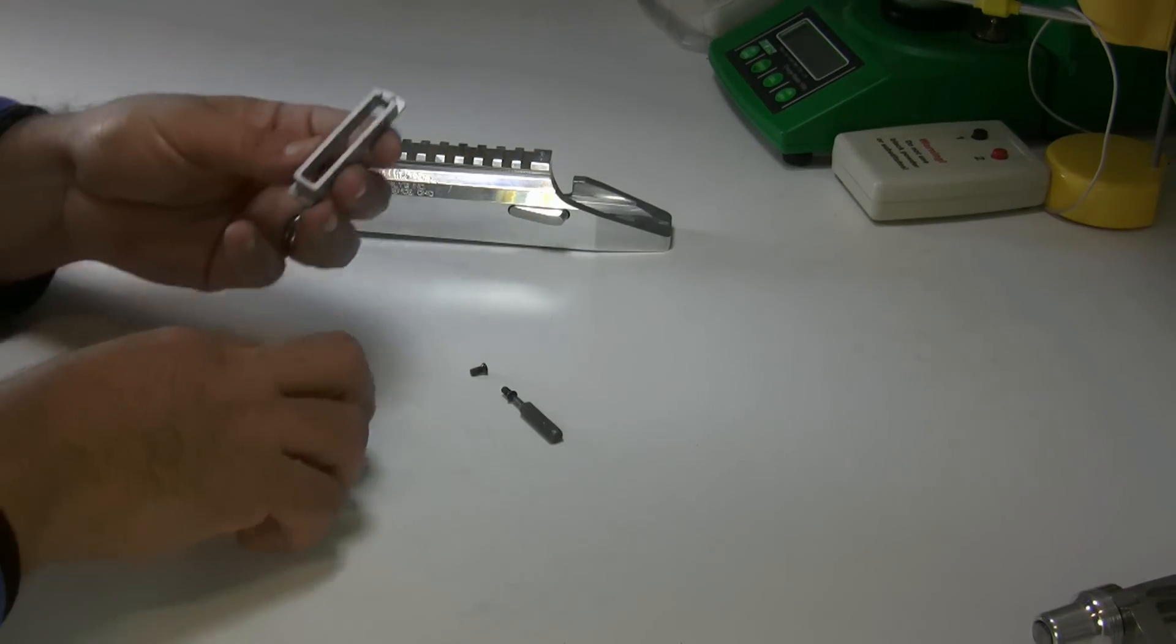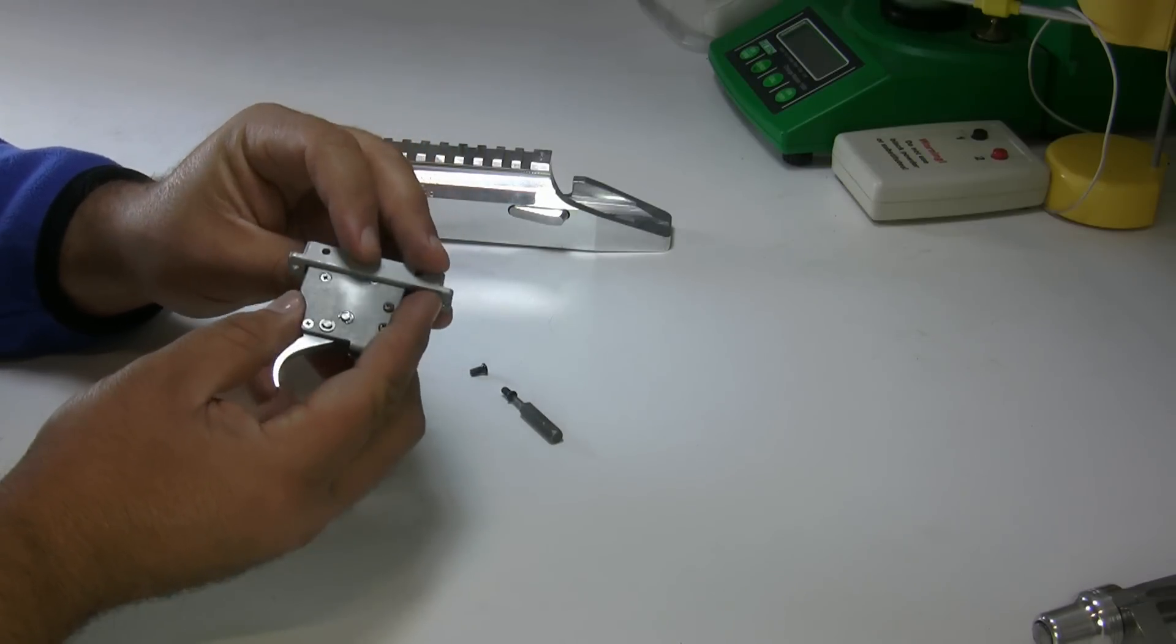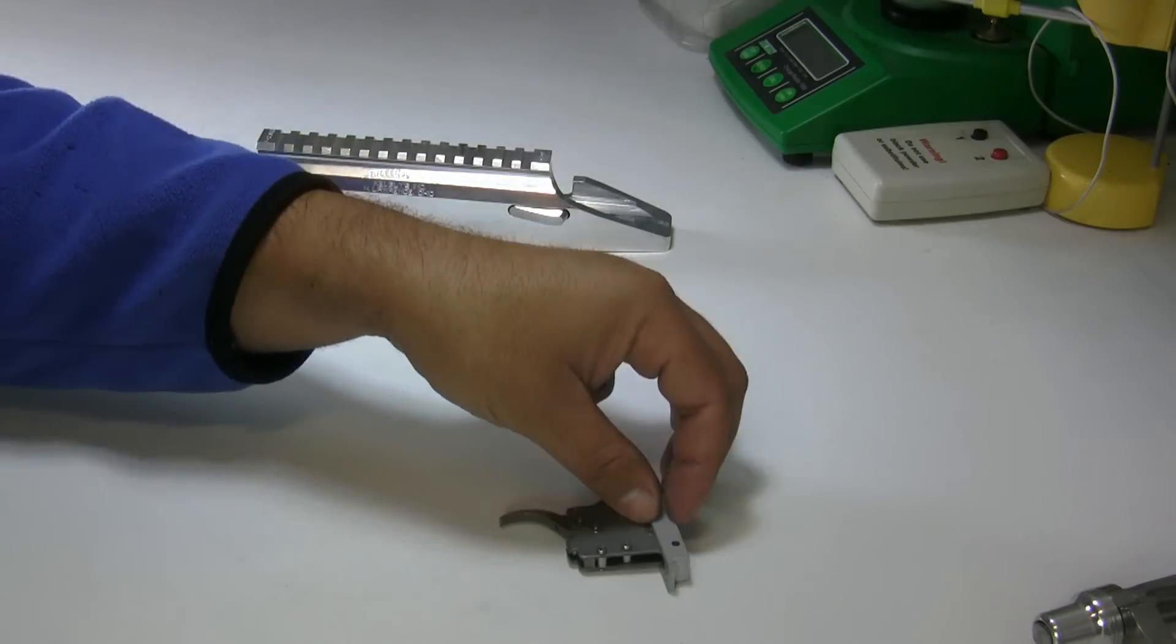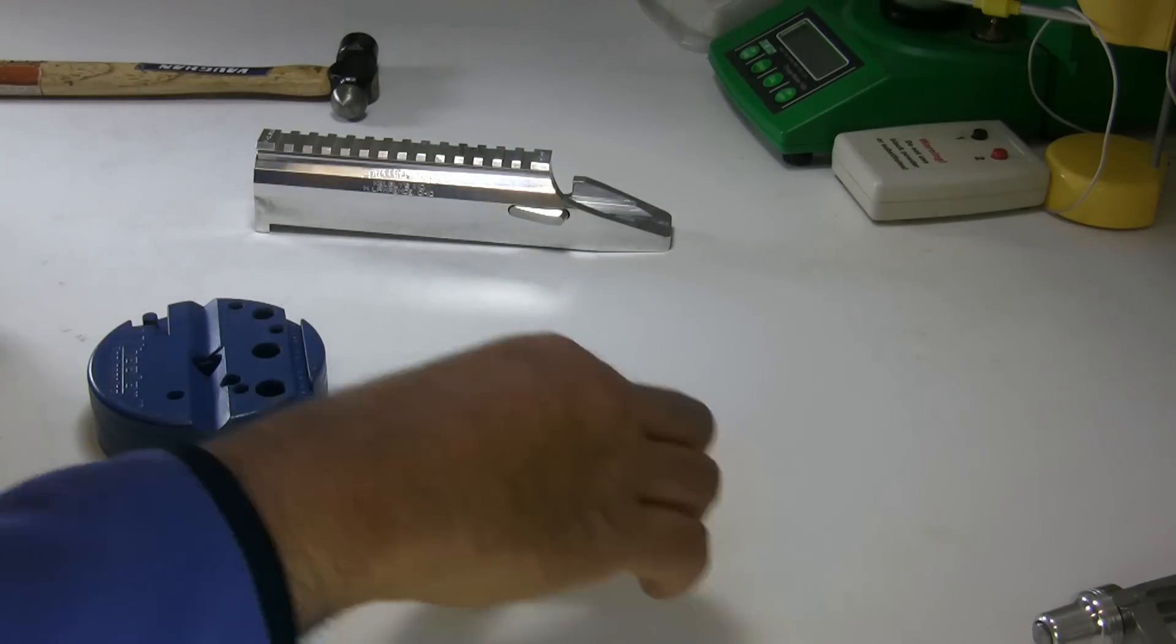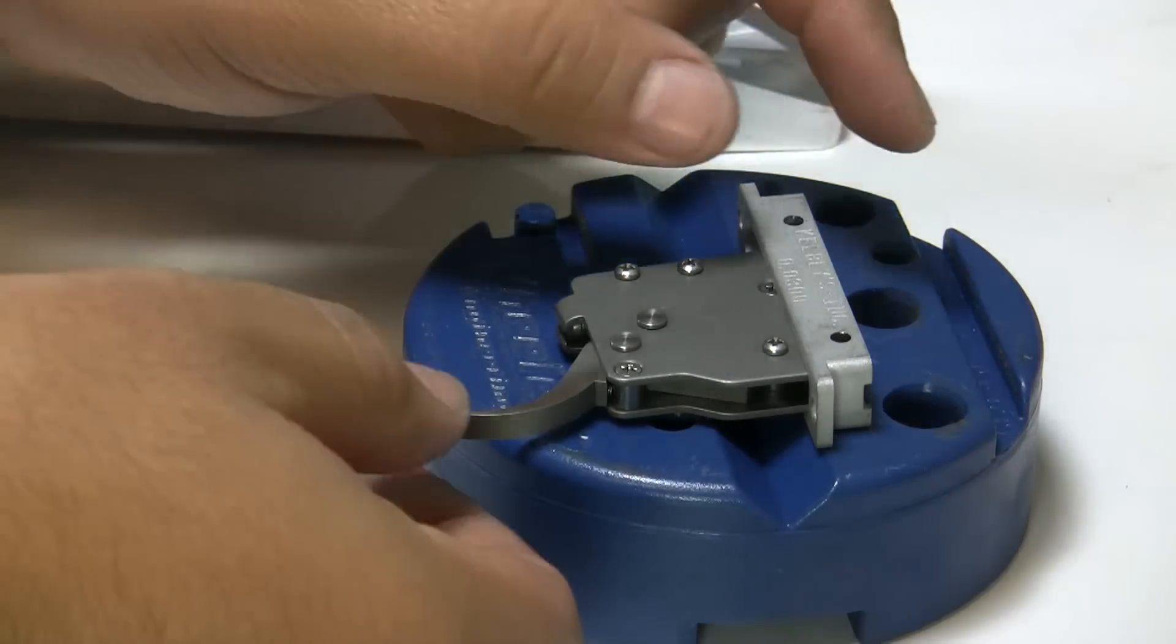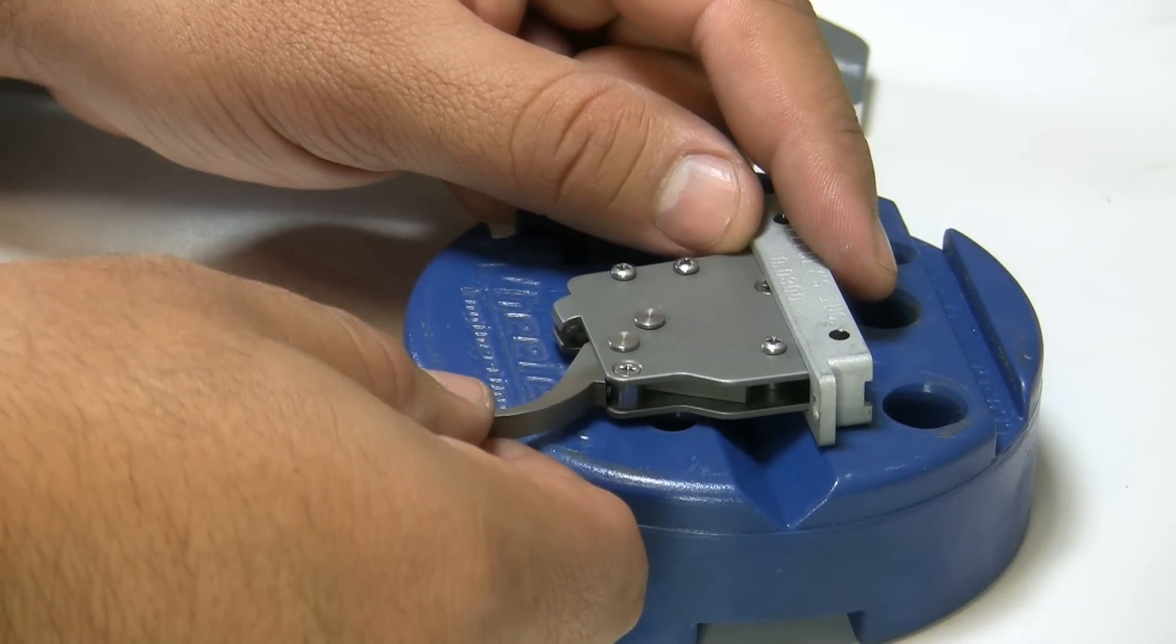Okay, you drop your trigger in here like this. You get your pins. The first thing you need to do is align the trigger with the hanger, the holes.